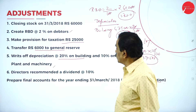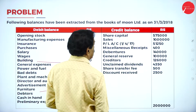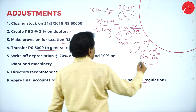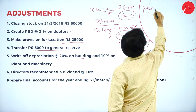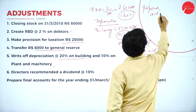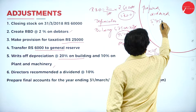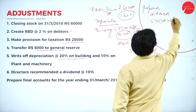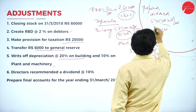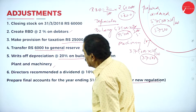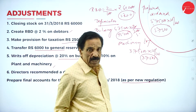Proposed dividend is calculated on share capital. Share capital is ₹5,75,000. Proposed dividend at 10 percent: 10% of ₹5,75,000 equals ₹57,500. Now I will explain how to prepare the accounts as per the new regulation.